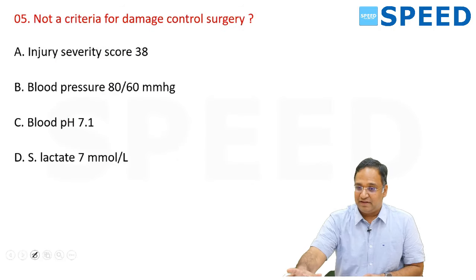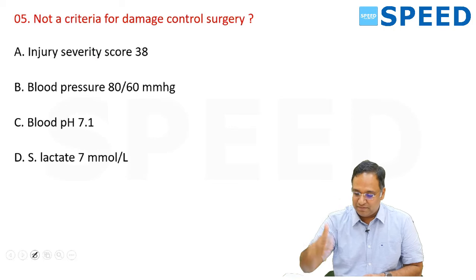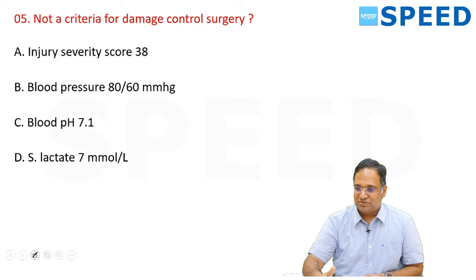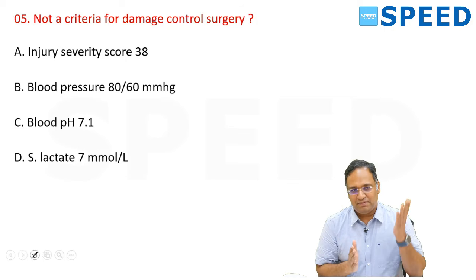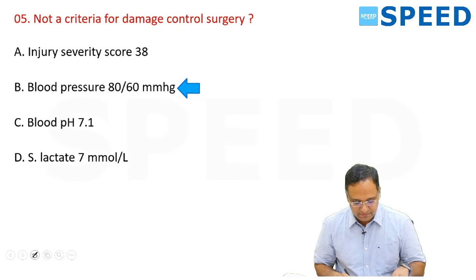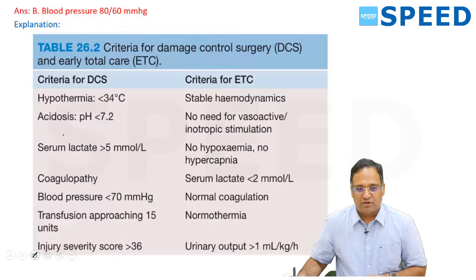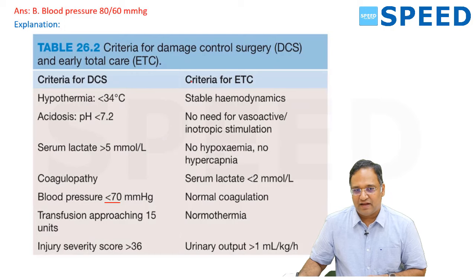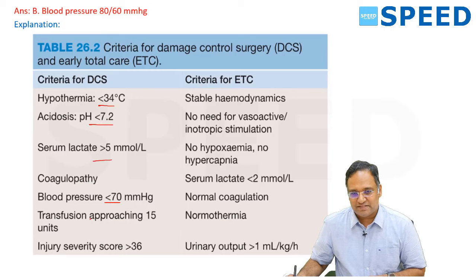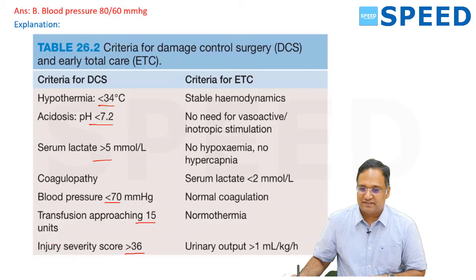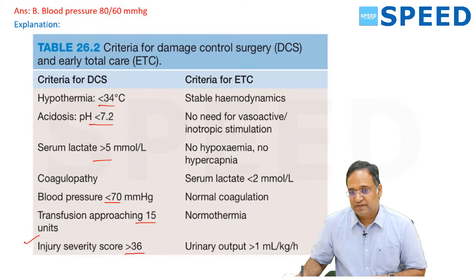Not a criteria for damage control surgery: the right answer is blood pressure 80/90 mmHg, because the BP criterion for DCS requires it to be below 70 mmHg. Criteria for DCS: hypothermia less than 34°C, acidosis pH less than 7.2, serum lactate more than 5 mmol/L, blood pressure less than 70 mmHg, transfusion approaching 15 units, injury severity score more than 36. Criteria for early total care (ETC): stable haemodynamics, no vasopressors, no hypoxia, no hypercapnia.